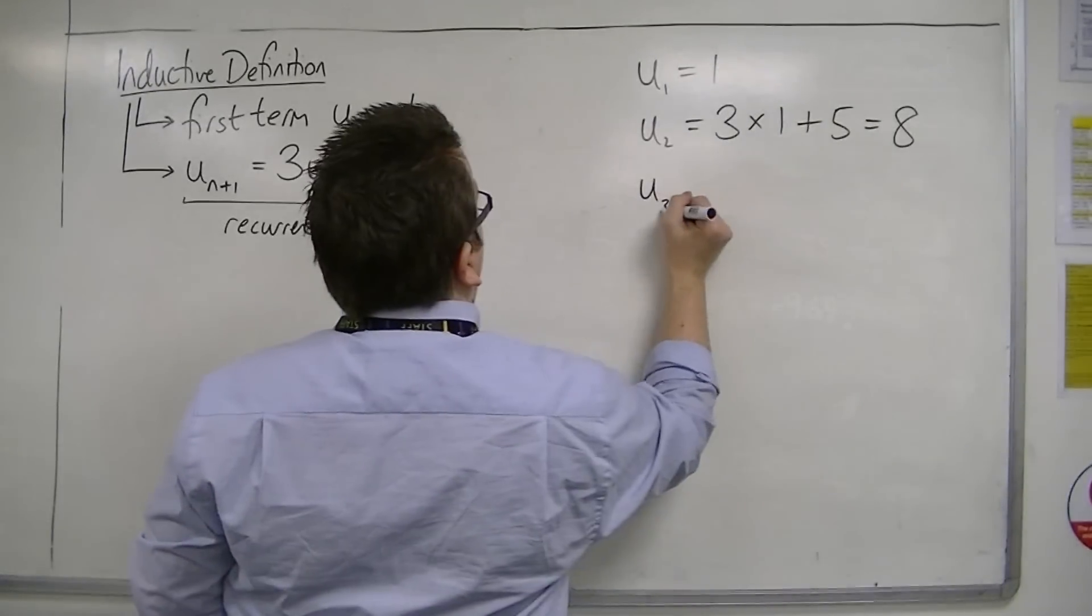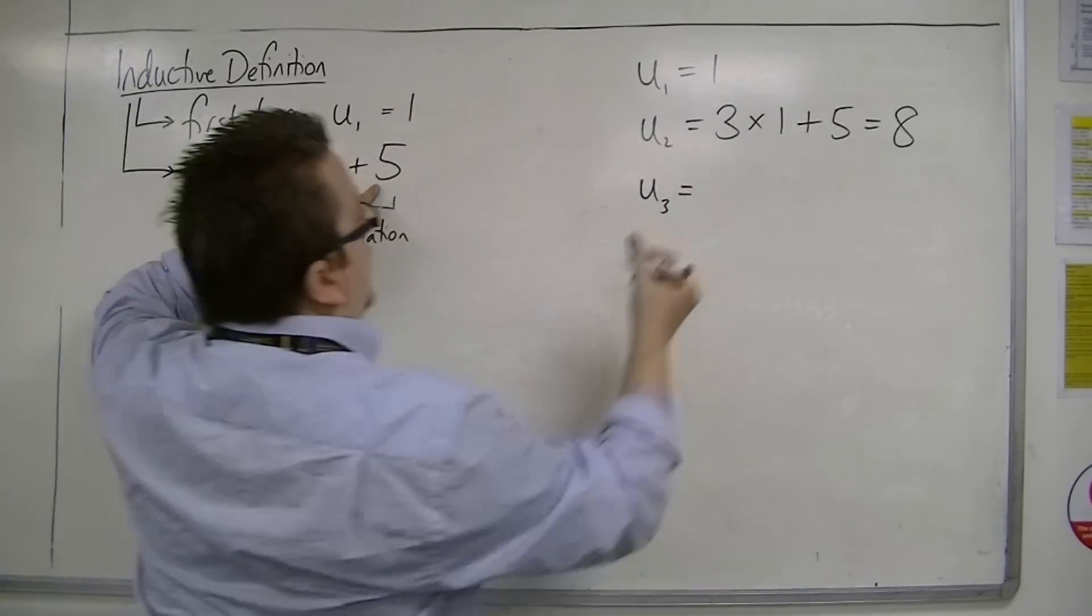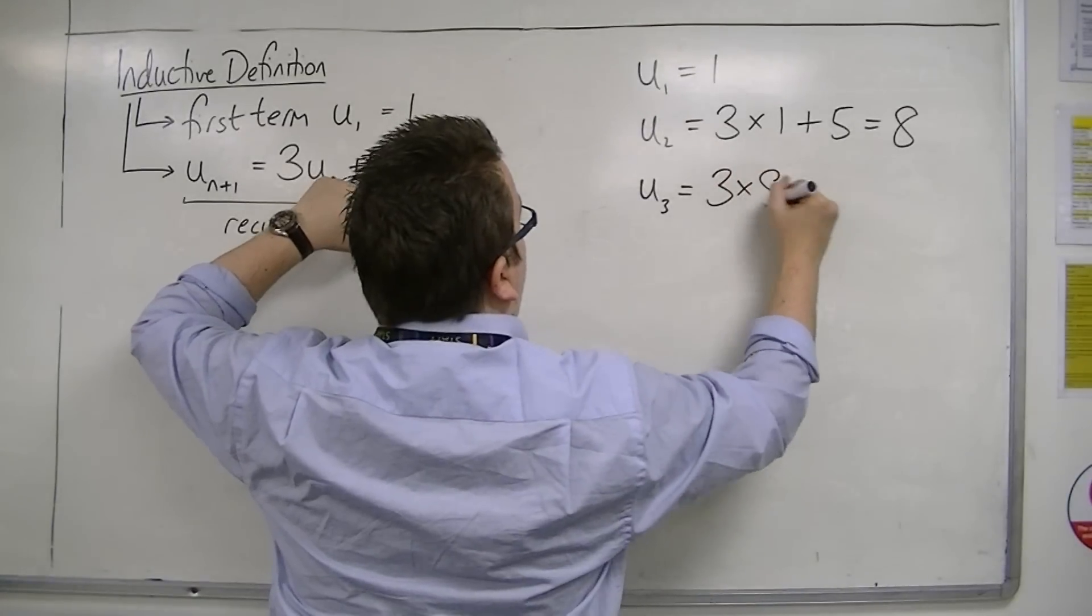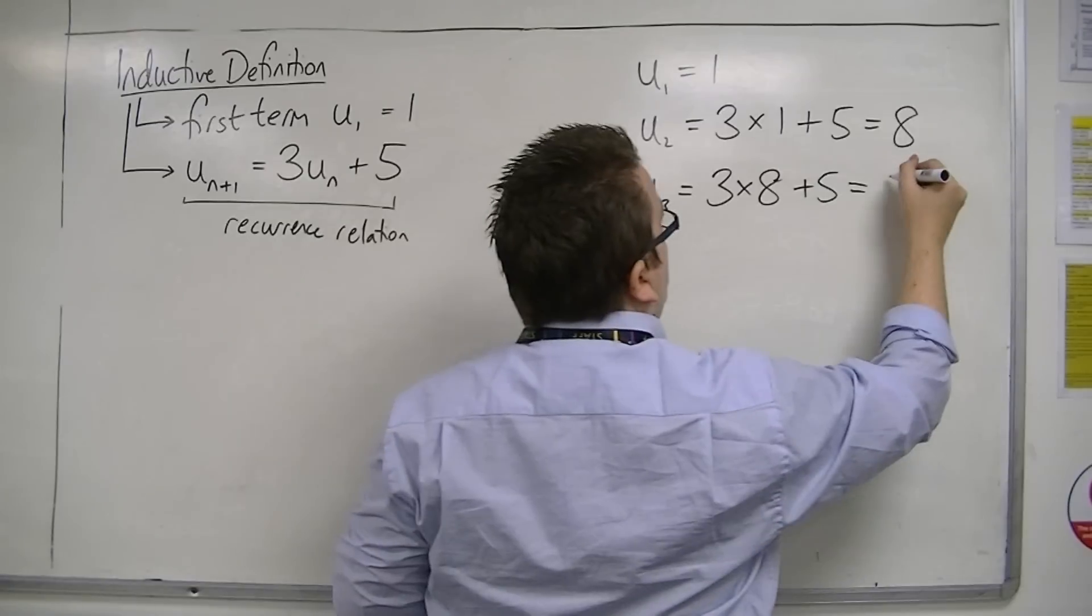U3 is 3 lots of U2 plus 5. So 3 lots of 8 plus 5. So 8, 16, 24 plus 5 is 29.